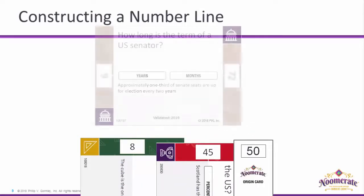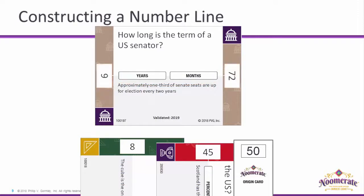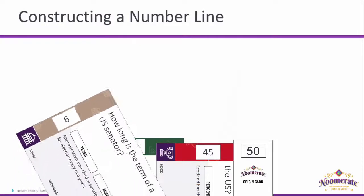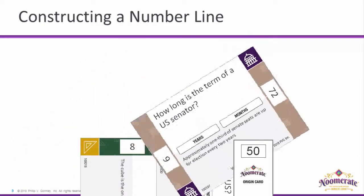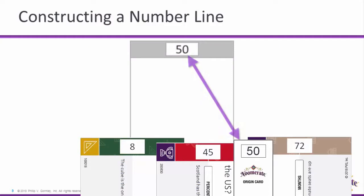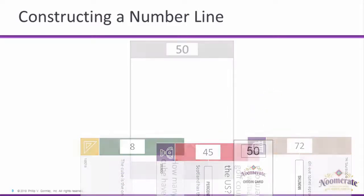The next question is how long is the term of a U.S. senator, and I am offered the option of answering in years or in months. I'm going to guess less than 8 years, and since the answer is 6 years, I win the card and add it to the left of the 8 in my number line. If I had chosen to go with months and answered greater than 50 months, I would have placed the card to the right of the 50 on my number line. Finally, what if I have a card with an answer already present in my number line — in this case, 50? Both between 45 and 50 and between 50 and 72 are correct, and I may place the card in either location.